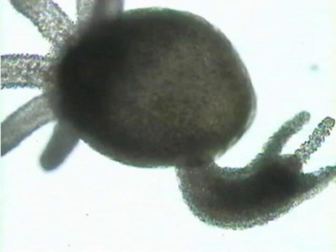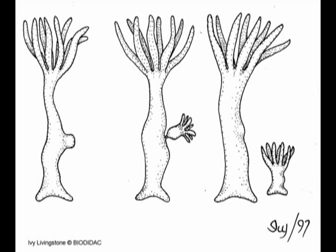The buds grow into fully matured individuals, which eventually break away from the parent organism. They then grow and will eventually bud again. They do this over and over again until a full cycle has completed.